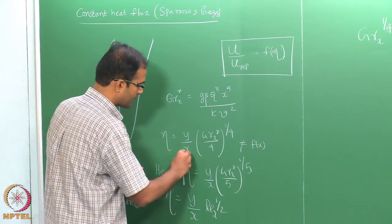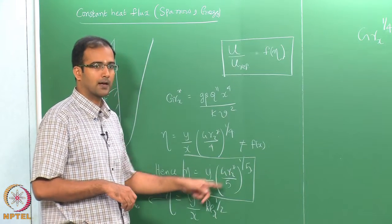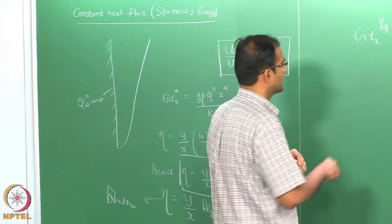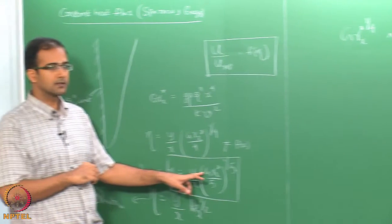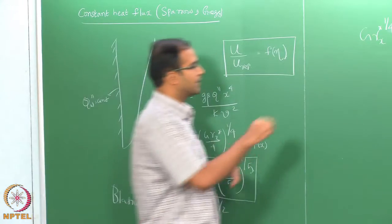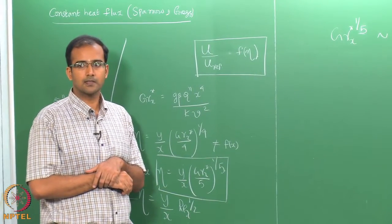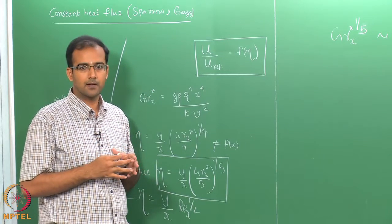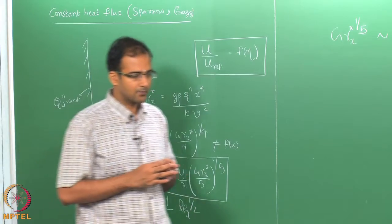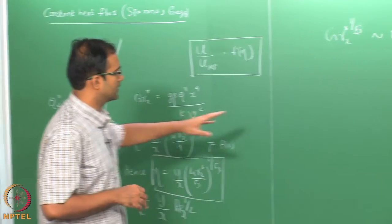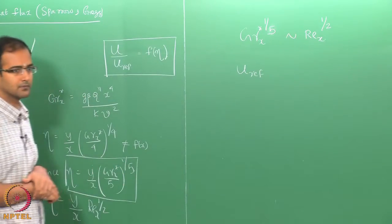Now in the present case, with the modified Grashof number we have a modified similarity variable. How do we do the order of magnitude in terms of Gr*? This cannot be the same because now we have modified our similarity variable to be Gr* to the power 1/5. So Gr* to the power 1/5 should be of the order of magnitude of Re_x to the power 1/2, according to the current modification of the similarity variable by Sparrow and Gregg. This should be the order of magnitude of your modified Grashof number. Now substitute our definition of modified Grashof number to calculate the order of magnitude of U_reference.